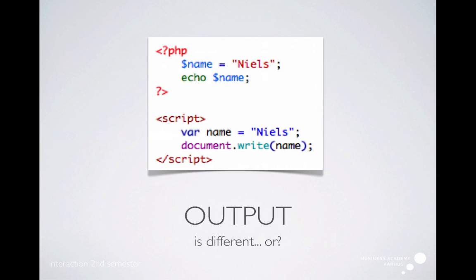When we want to output something in the browser or in HTML, we do it like this in PHP and like this in JavaScript. In PHP, we use the command 'echo'. We can also use the command 'print', but the most common way of displaying things from PHP is the use of echo. In JavaScript, we can use document.write, which means we write out something at the place we are in the HTML code. So they are similar in that you can mix HTML and PHP or JavaScript, making some variables and then outputting them on the page.